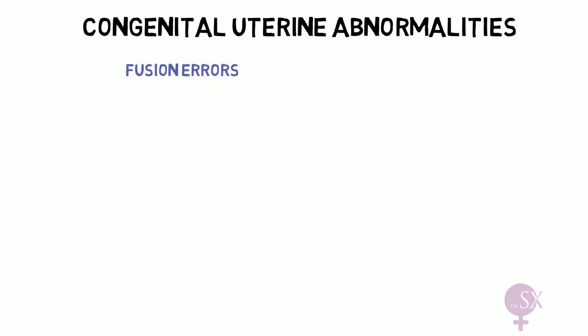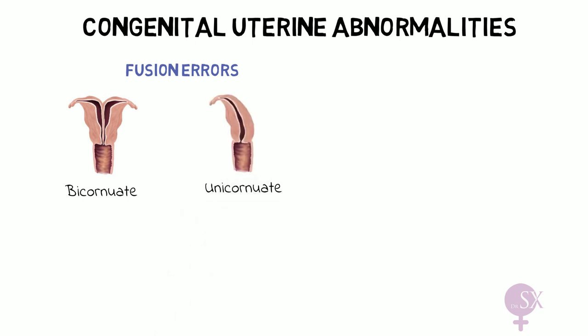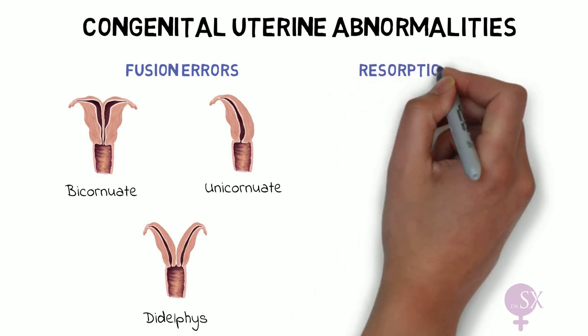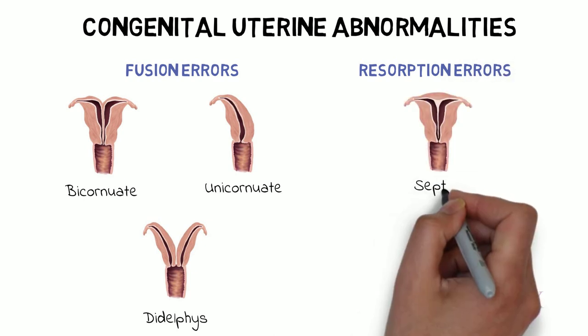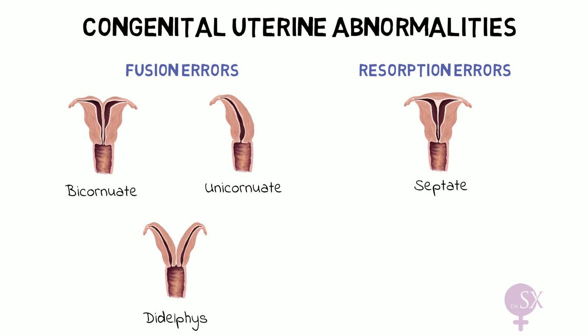With this embryological background, we can identify which stage went wrong in each anomaly. Errors in fusion: a bicornuate uterus involves partial fusion of the ducts, creating an indent in the fundus. A unicornuate uterus involves an asymmetric lateral fusion defect with the other duct poorly developed. Didelphys occurs when both Müllerian ducts fail to fuse, causing duplication of reproductive structures. Errors of septal resorption: a septate uterus has a normal external fundal surface but incomplete resorption of the septum between the two Müllerian ducts. An arcuate uterus has a slight midline septum with minimal, broad fundal cavity indentation.